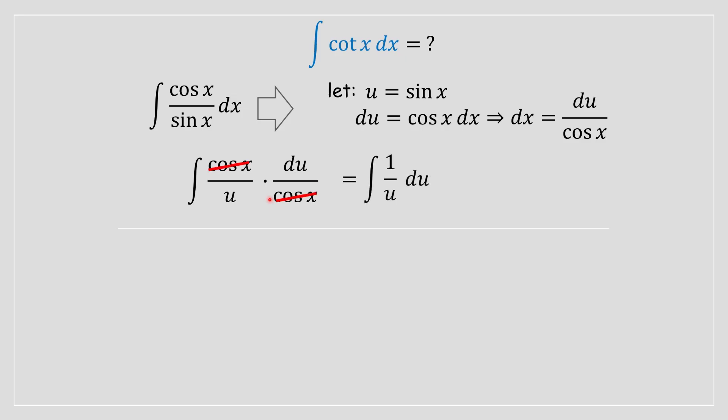What you're going to be left with is just the integral of 1/u du. We all know that's going to be equal to ln absolute value of u plus some constant C. Now what's left to do is basically replace the u variable with sin(x), and that's the answer to this problem.